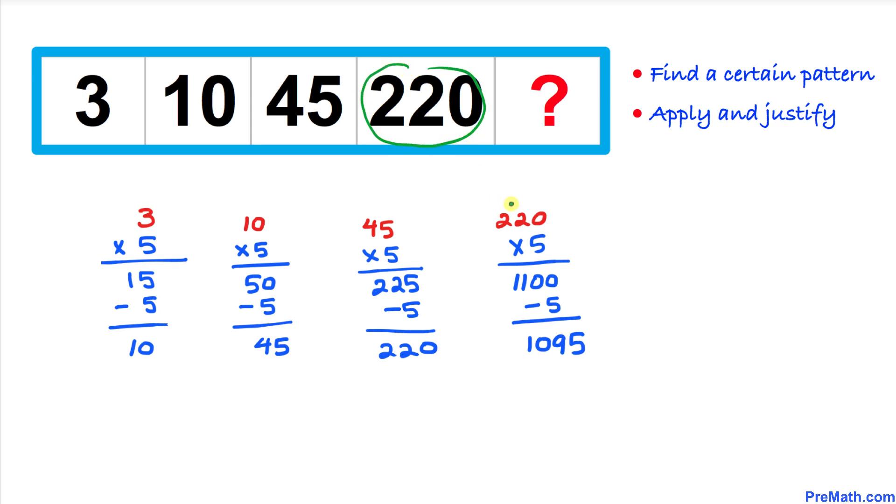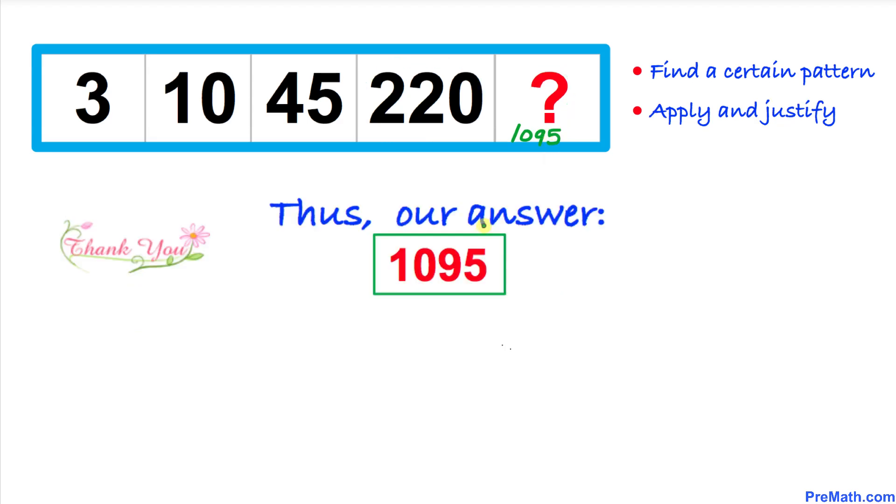And finally, let's focus on this number 220, which is right up here. Multiply by 5. That's going to give us 1100. Minus 5 is going to give us 1095. So that means the number at this unknown spot is going to be 1095.